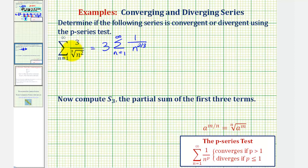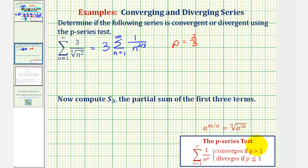Notice that the index is the denominator and the exponent is the numerator, given by this rule here. In this form, notice how p, the exponent, is equal to two-thirds, and two-thirds is less than or equal to one, and therefore the series diverges.